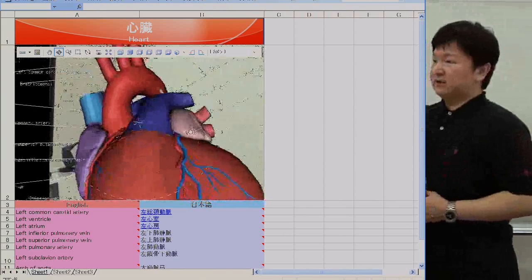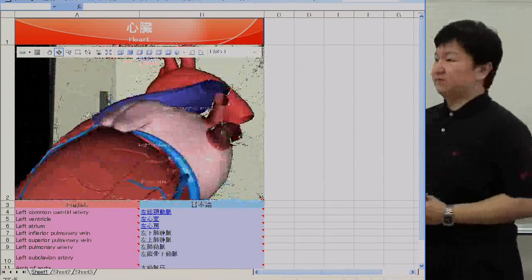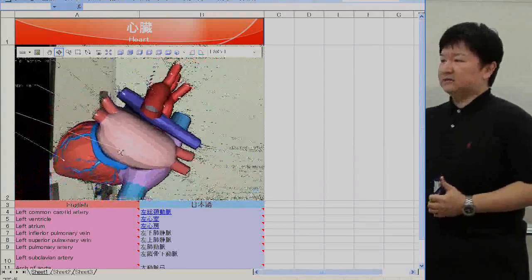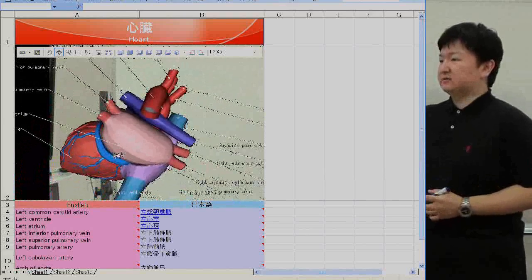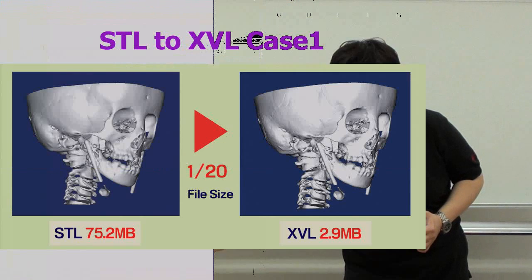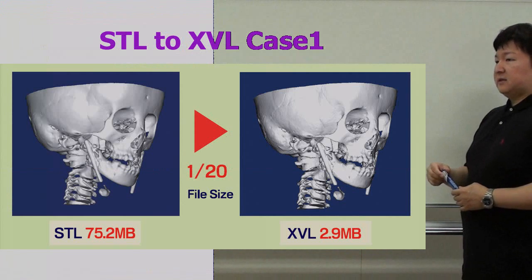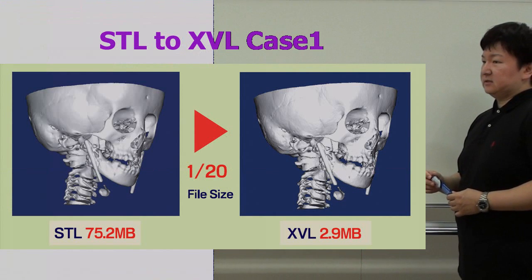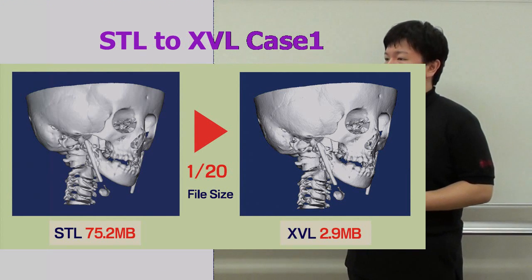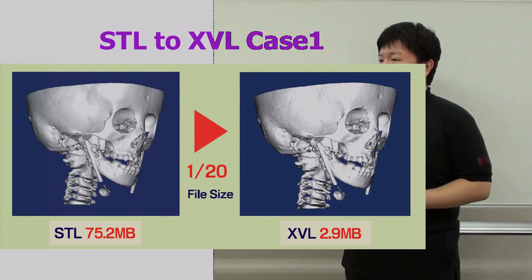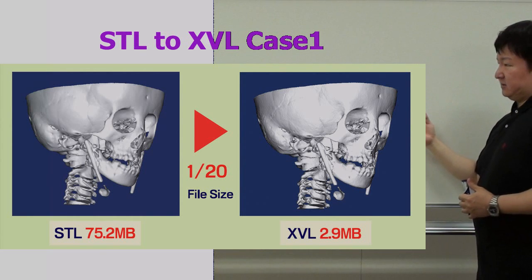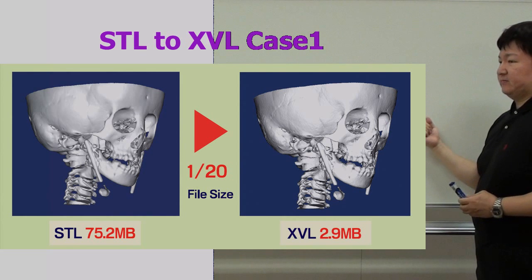Zooming and rotation are also possible by using your mouse. This is the Excel file — you can embed it into Excel. This is a clinical case. The left side is the Excel file using the original method, and the right side is the Excel file converted by using our software.